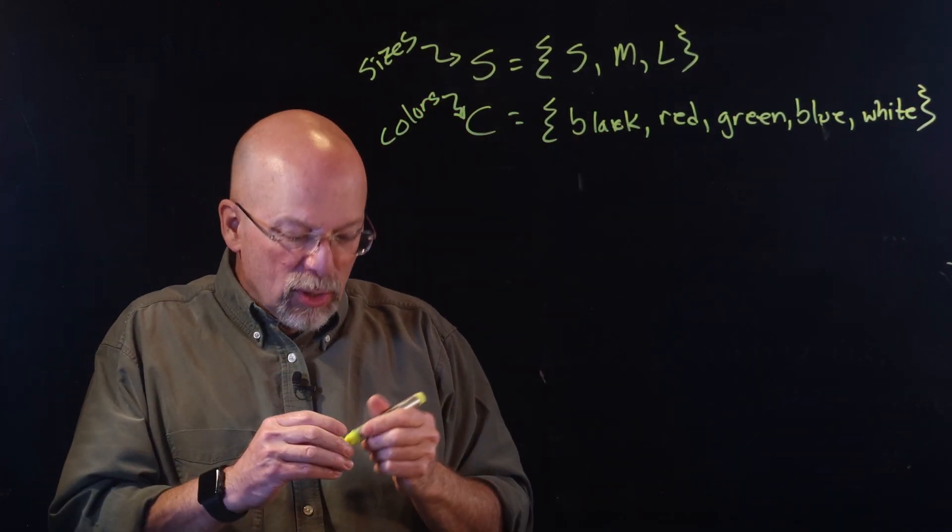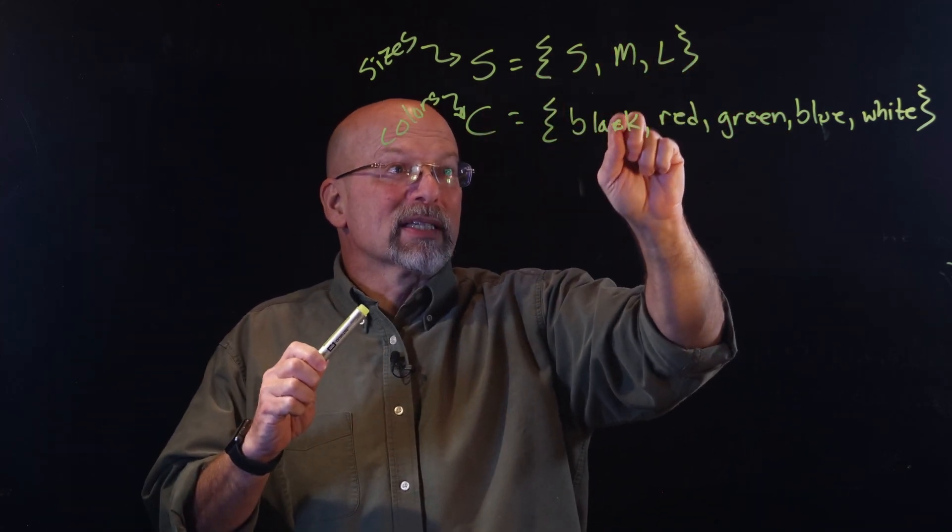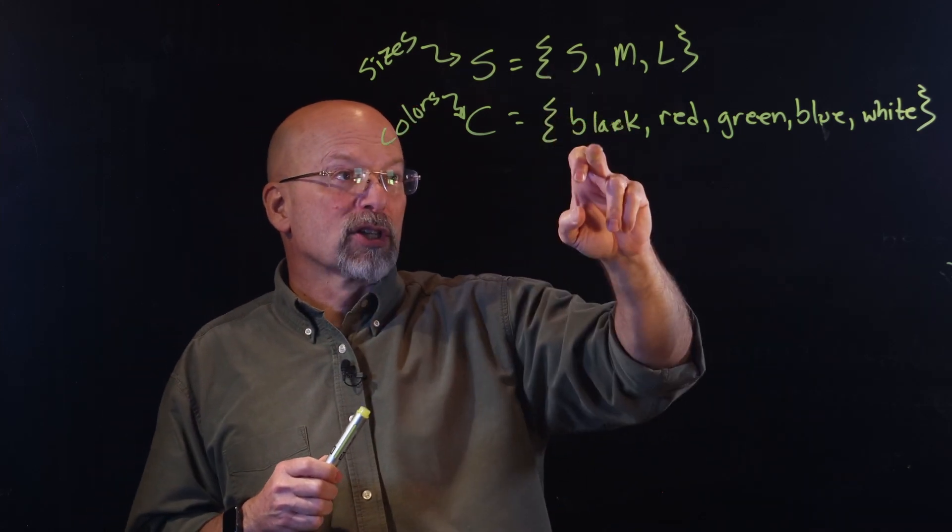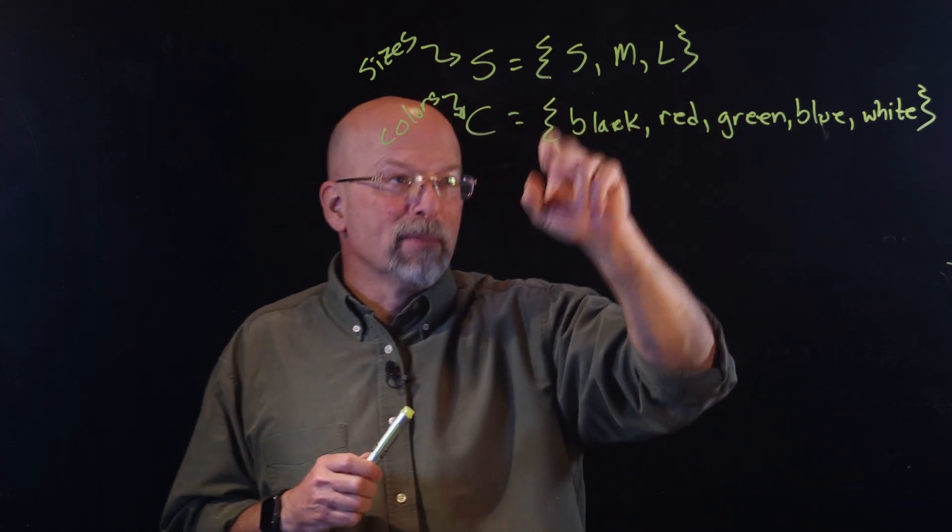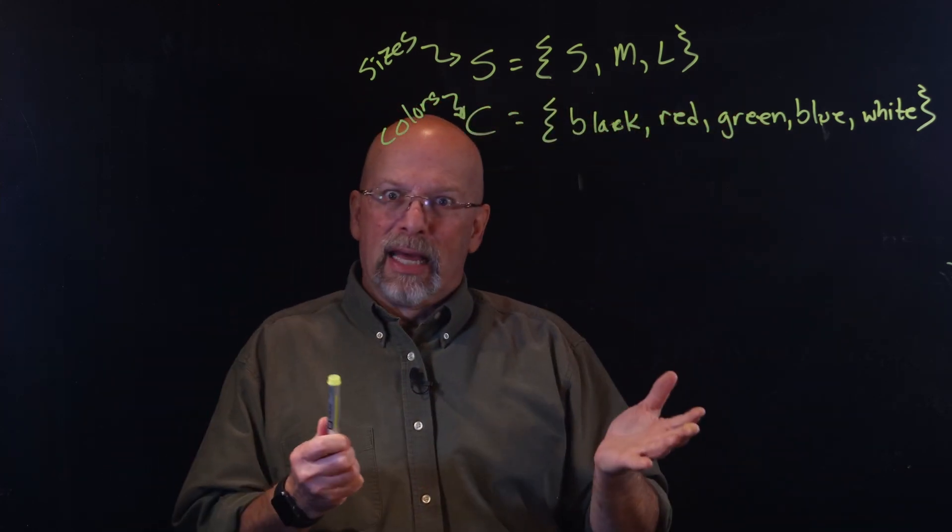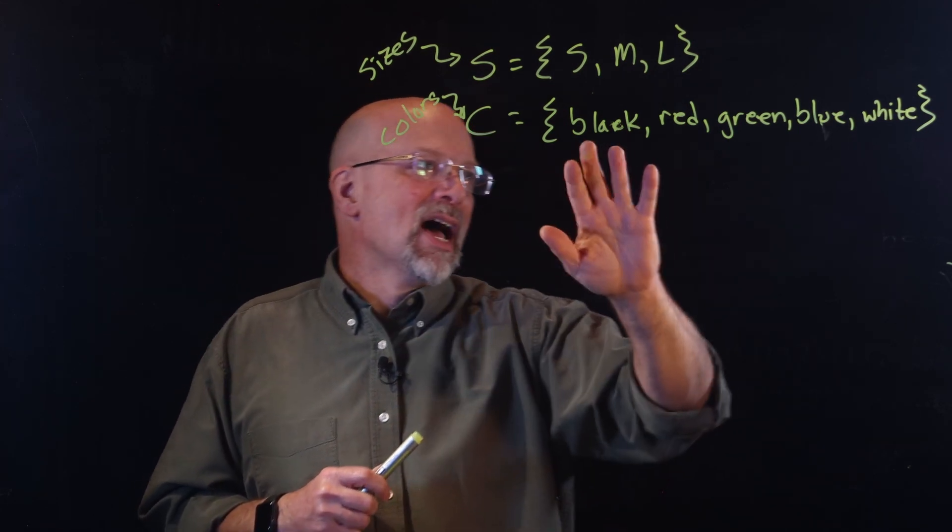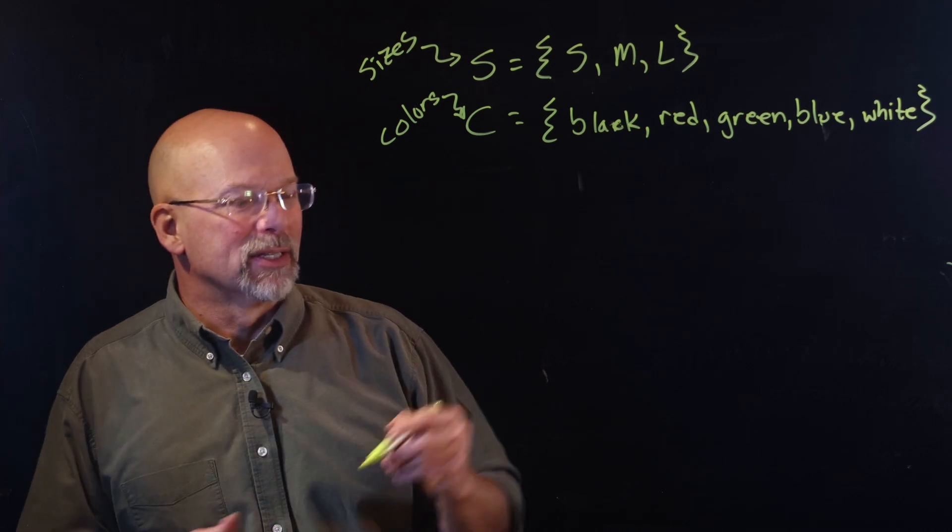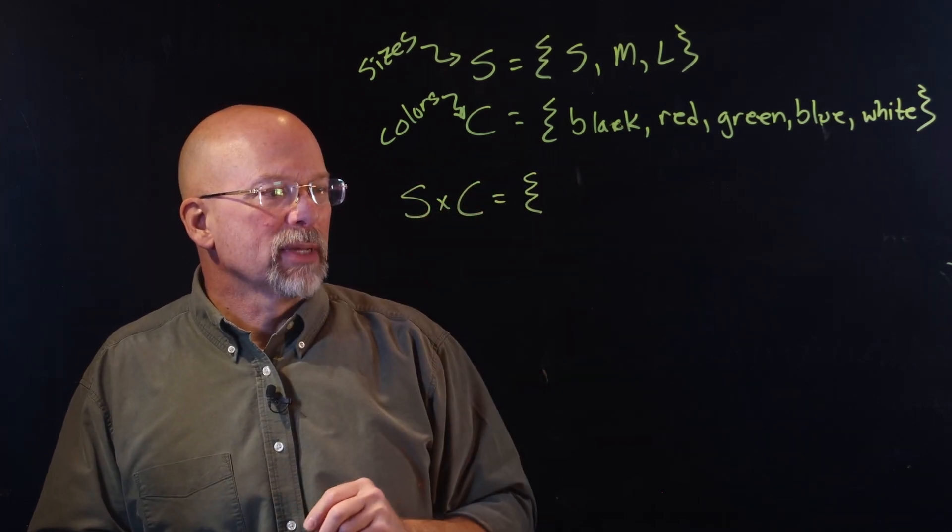Now, what I'm going to do is I want to figure out, first of all, what, how many different, what different combinations of these shirts I can come up with. So small is paired with black, red, green, blue, white, and then medium and so forth. Now, how many elements are we looking at? Well, I've got three elements for my size. I've got five elements for my color. That's 15 different elements.